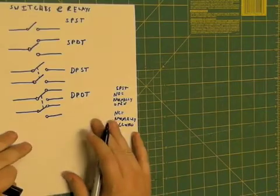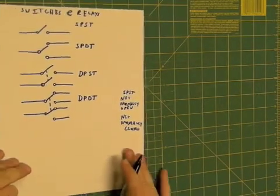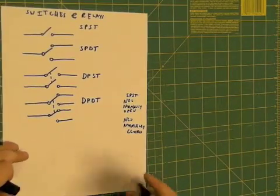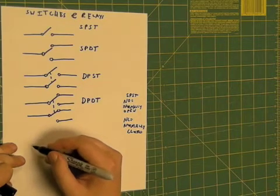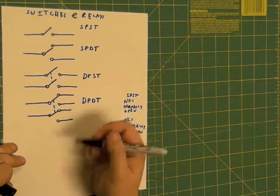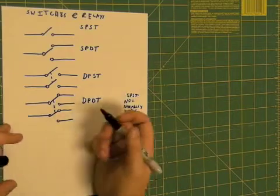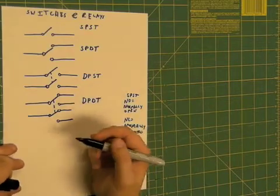They're often used when you have some sort of control circuitry, like a 5-volt Bitwacker, and you need to switch on and off something that has a lot more current and voltage than your control circuitry can handle.